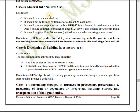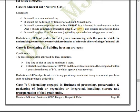Case 5 is mineral oil or natural gas. If you are running any enterprise or company and want a deduction, the following conditions must be satisfied: it should be a newly formed undertaking; it should not be formed by transfer of old plant and machinery; and it should commence production before 1-4-1997 if located in the north-eastern region, or after 31-3-1999 if situated anywhere else in India.